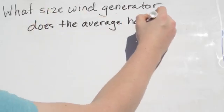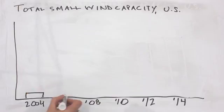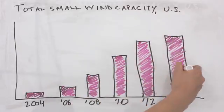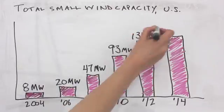It's a great question. Recently, small wind generation capacity has grown in the U.S. from a total of about 8 megawatts in 2004 to 140 megawatts in 2014.